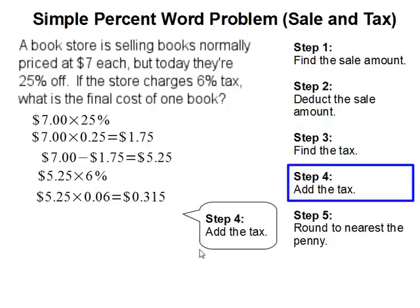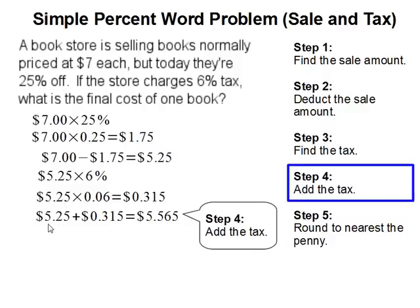Step four: we are going to add the tax to the sale price. So $5.25 plus $0.315 gets us $5.565.